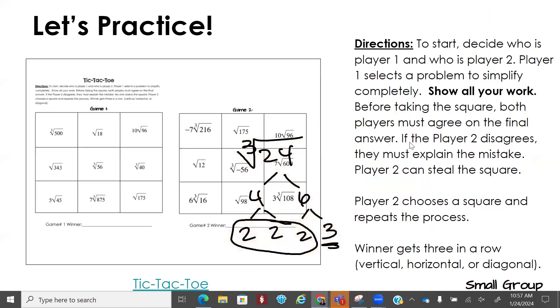So what I'd like for you to do is you have a tic-tac-toe sheet. I want you to be on game 1, and you're gonna decide who is gonna be player 1 and who's gonna be player 2. You're gonna work with people who are around your seat. Don't get up and move across the room to go work with somebody. You're gonna show all your work. Before taking the square, both players must agree on the final answer. If player 2 disagrees, they must explain the mistake. Player 2 can steal the square. Then player 2 chooses a square and then repeats the process. I'm going to tell you now, on your mastery check, you can only use those yellow calculators. For square roots, if you type the original problem into that yellow calculator, it simplifies it for you. It tells you what the answer is. You have to figure out how to do the process. So if you want to check your work, you can use the yellow calculator. You must know how to do it, though. If you don't show work, you don't get credit.